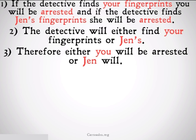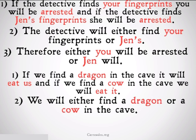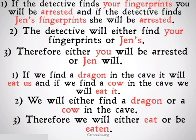If that didn't make sense, take a look at this next example. If we find a dragon in the cave, it will eat us, and if we find a cow in the cave, we will eat it. We will either find a dragon or a cow in the cave — therefore, we will either eat or be eaten.